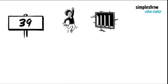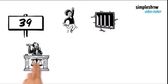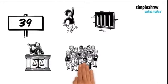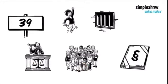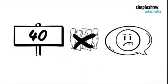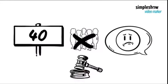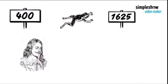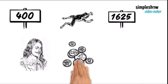Clause 39 states... Let's jump to 400 years later, to 1625. King Charles I tried to enforce a tax on the people of England to pay for a war with Spain. When members of the ruling class refused to pay, they were thrown in jail.